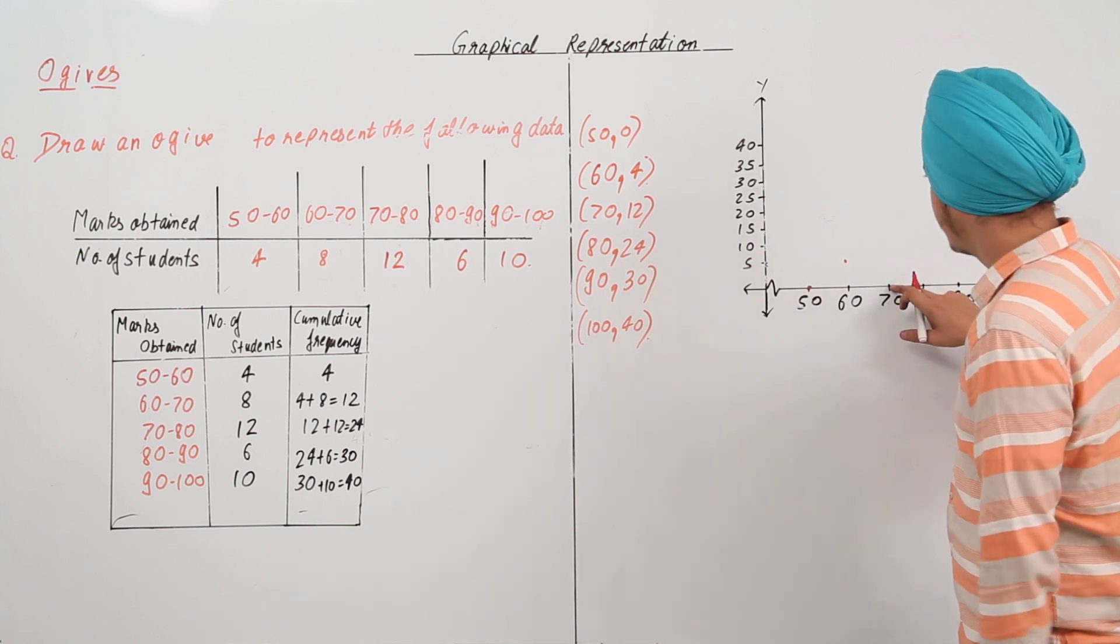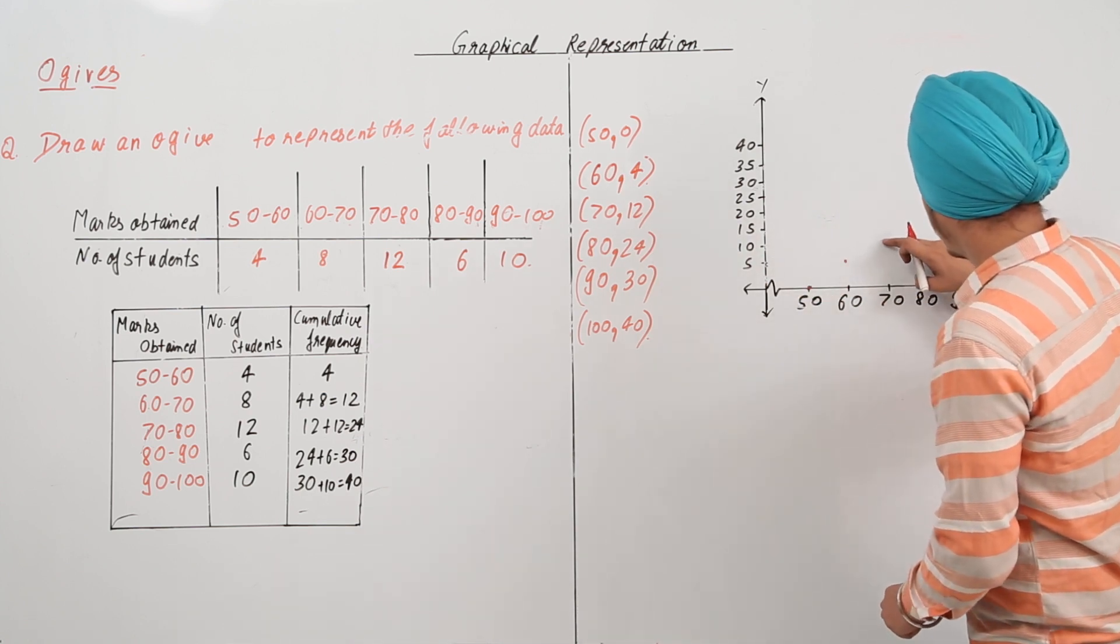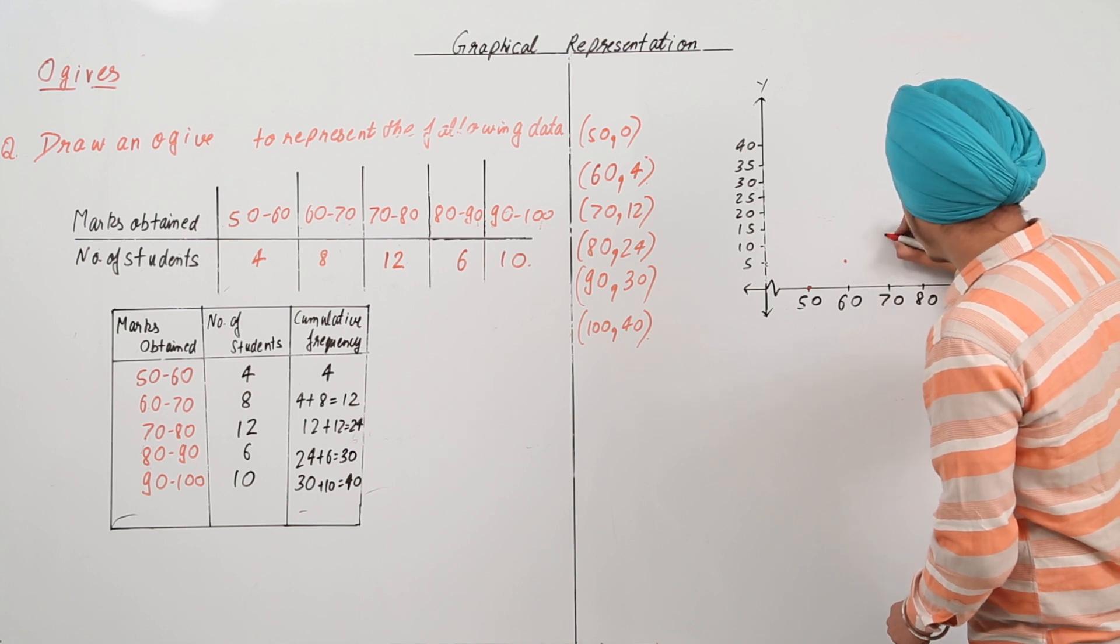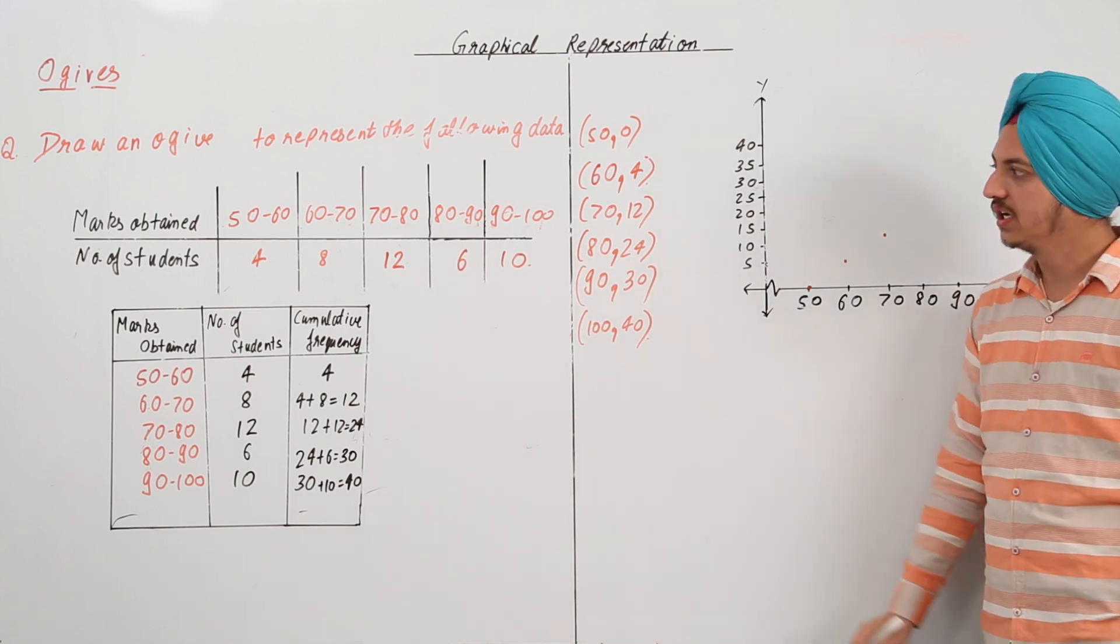Next, we have 70, 12. So, 70 is here, 10 is over here and 12 will be just a bit higher than 10. So, it will be somewhere over here.